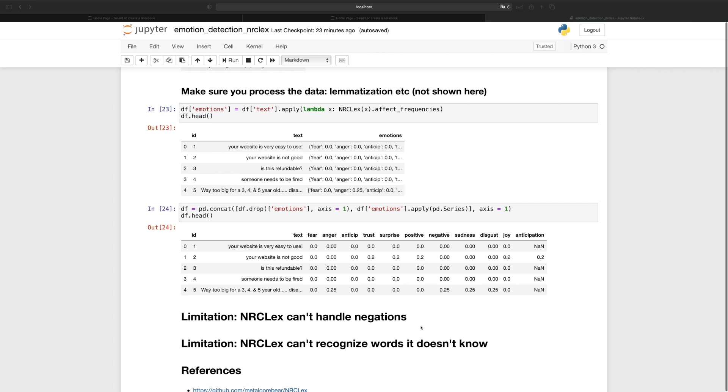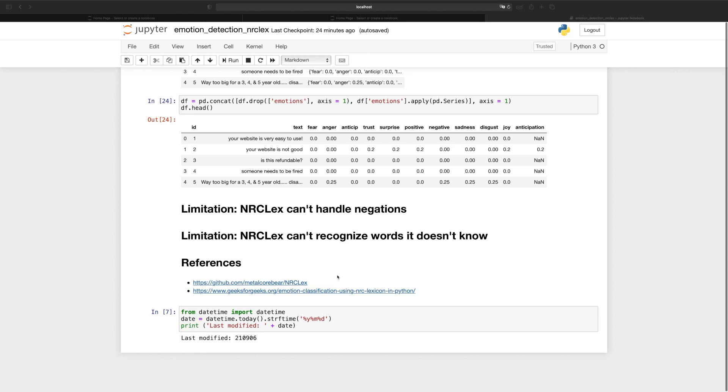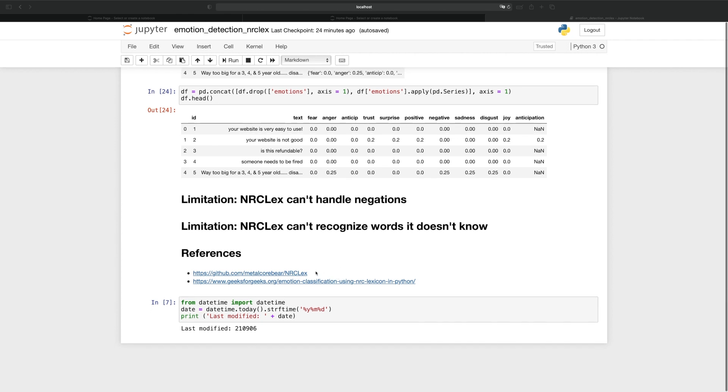Finally, I will remind you some of the limitations the package has. The first one being that NRC-Lex can't handle negations. That's why for the sentence your website is not good, good is being interpreted as positive and joyful. NRC-Lex also cannot recognize words that it doesn't know. So someone needs to be fired returns no emotion whatsoever because the word fired is not in the corpus. And that is another reason why we need to lemmatize the words. For example, fired with a D may not be in the corpus, but the word fire could potentially be there. So you want to strip away these extra grammatical things at the end.